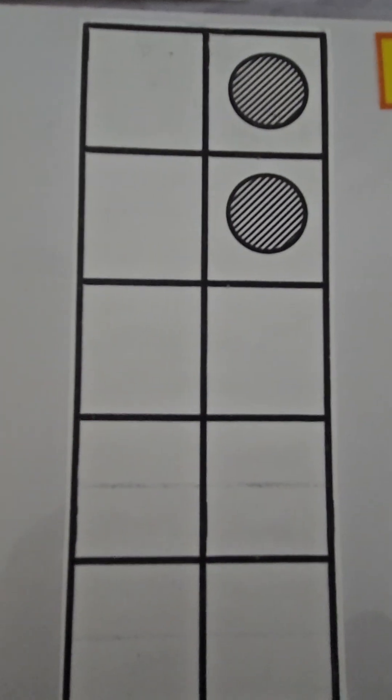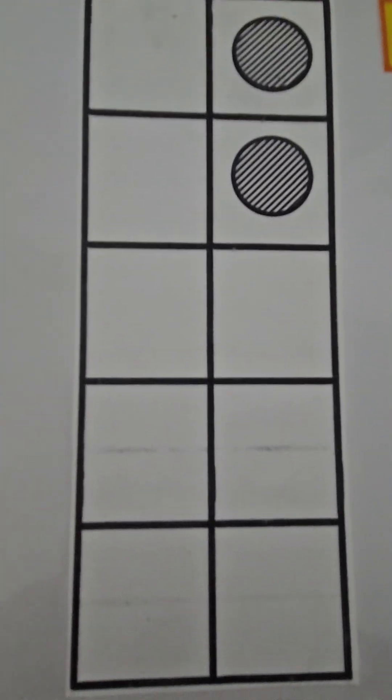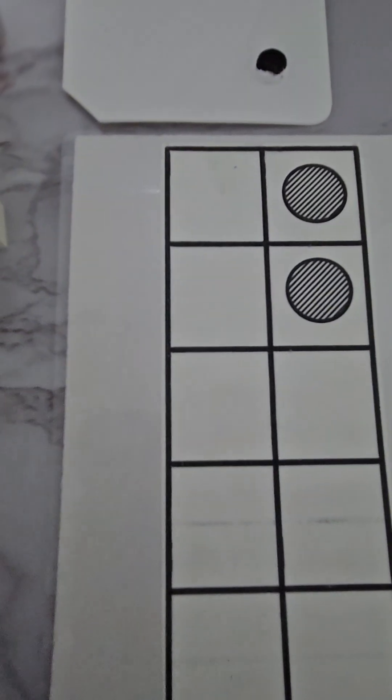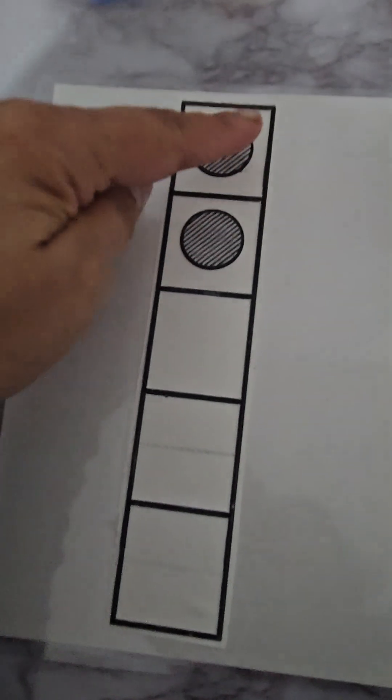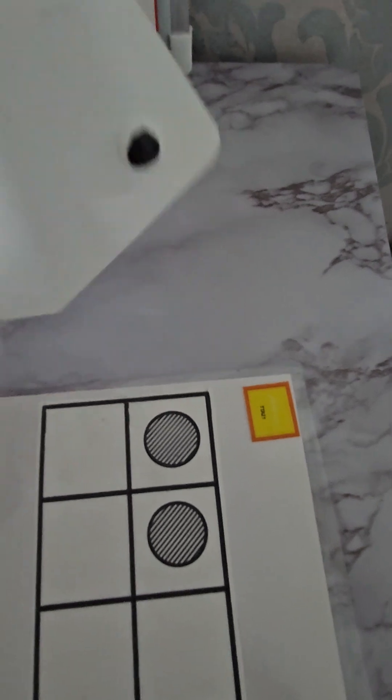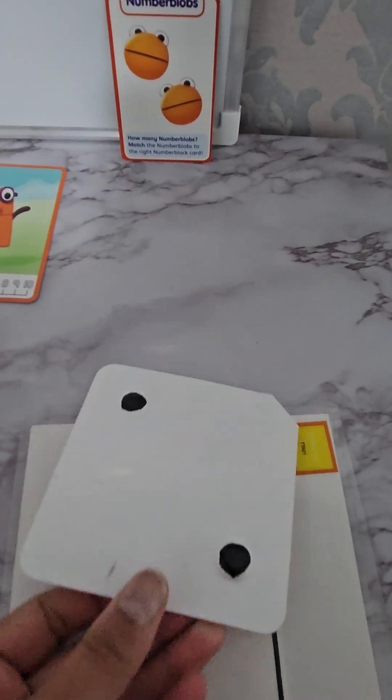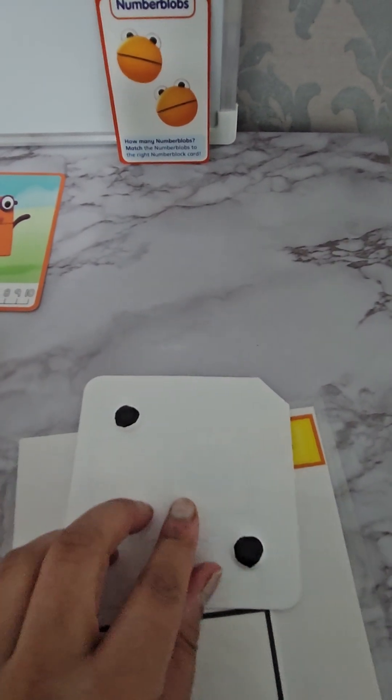This is two dots on a ten number card. One, two. This is five boxes with two dots. That's also a pair. This is a card with two dots. We can touch them and feel them and understand there are two.